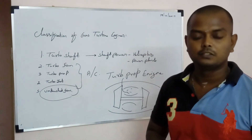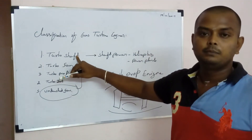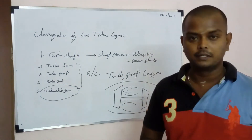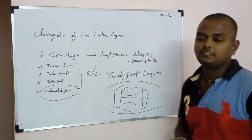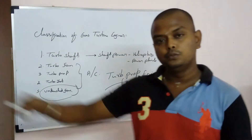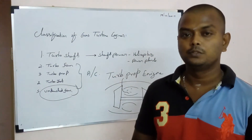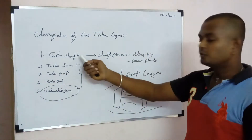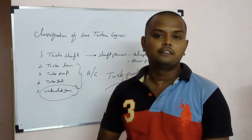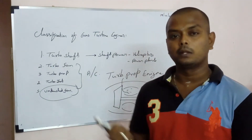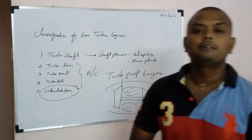Engine to engine, the power output requirement will vary. The turbo shaft is specifically designed to give shaft power. This shaft power is very useful — in helicopters, which usually have a huge rotor, you need power to drive those rotor blades. So the turbo shaft is generally used in helicopters to drive the main rotor and rotor blades.